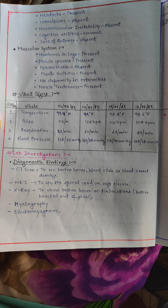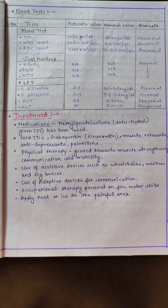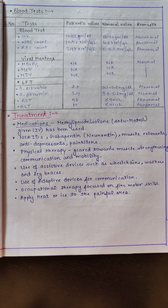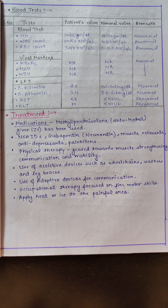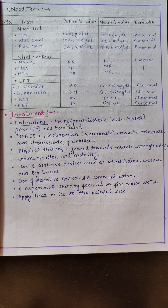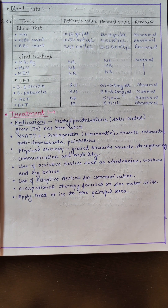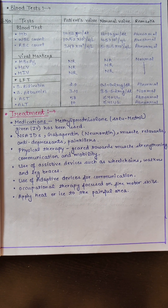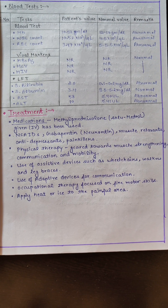For diagnostic findings: CT scan is used to see if there is any broken bone, blood clot, or blood vessel damage. MRI is used to see the spinal cord and soft tissues. X-ray shows broken bone or dislocations — meaning if any bone has been knocked out of place. Other diagnostics include myelography and electromyogram. Blood tests include CBC (complete blood count) with HB, WBC count to check for infection, RBC count, and viral markers — triple H: HBsAg, HCV, and HIV.